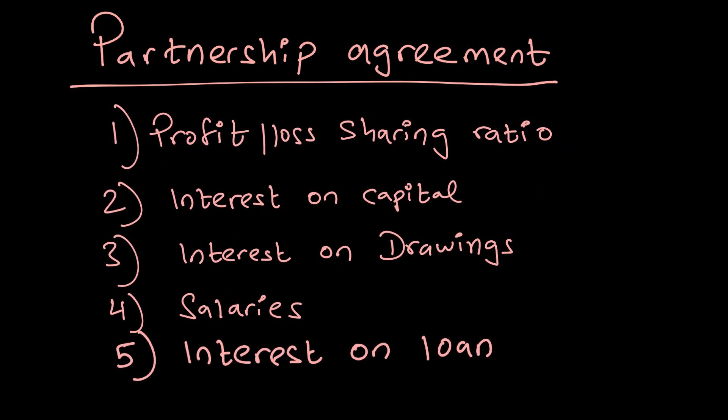These are the important partnership agreement terms. The first is the profit and loss sharing ratio — how profits and losses will be divided amongst partners. Next is interest on capital: if one partner has invested more than another, that partner should be compensated. The partnership, out of its profits, pays interest on the amount of capital invested. So if Partner A has invested more than Partner B, A gets a higher return compensating for the additional capital — otherwise the partner who invested more might want to withdraw their capital.